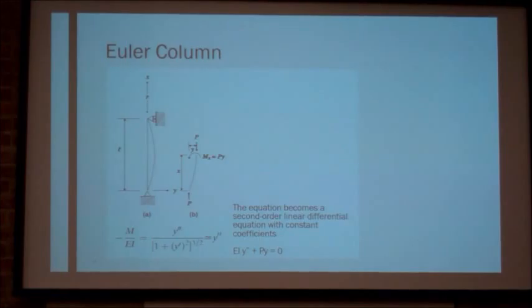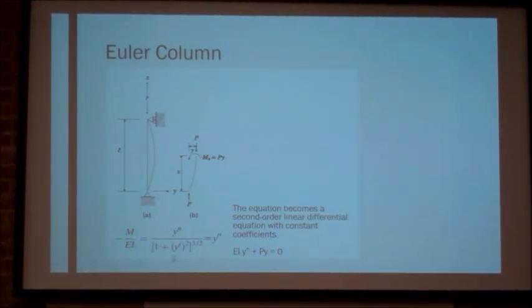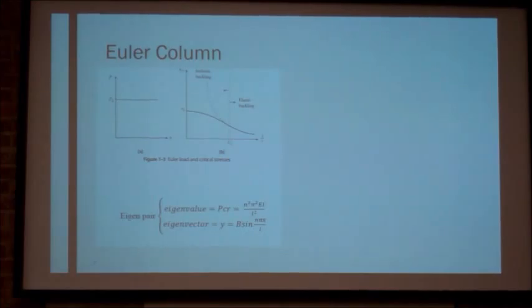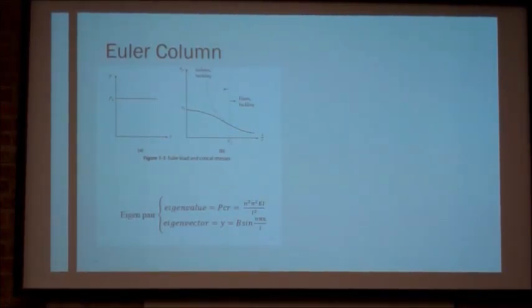This is the model and the free-body diagram. This is where we get a second-order linear differential equation based on this free-body diagram. P versus y and stress-strain diagrams are shown, and in my report I show where the eigenvalue problem comes from. We have a critical load it can withstand and eigenvector.